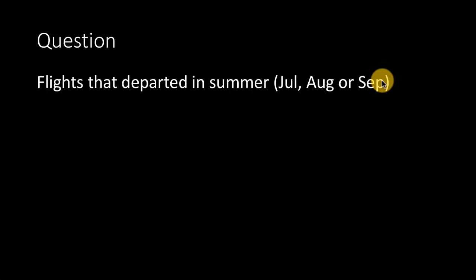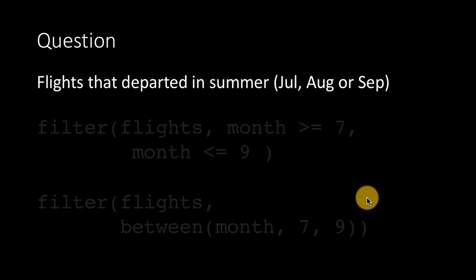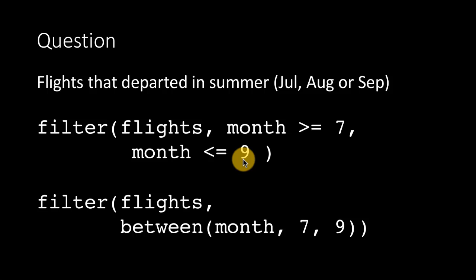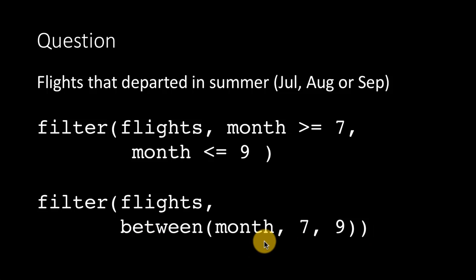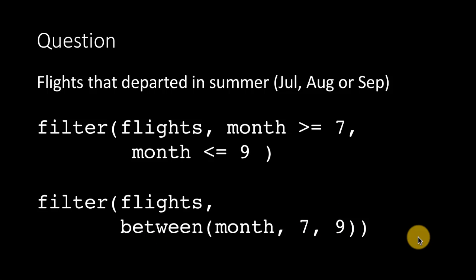For flights that departed in summer — July, August, September — we can write filter(flights, month >= 7, month <= 9). The comma in filter implicitly means AND. A cleaner approach is to use the between() function: filter(flights, between(month, 7, 9)). This reads: month is between 7 and 9 inclusive. The between() function is easier to understand and is the preferred way to express range conditions.